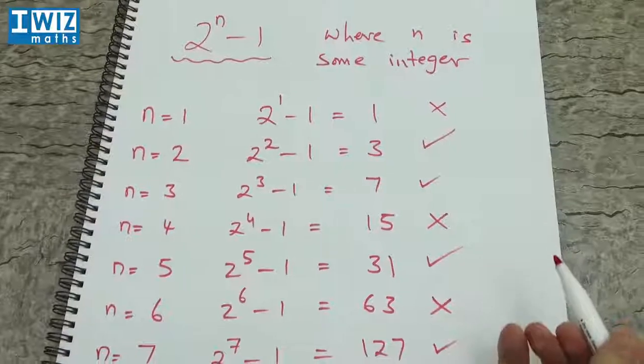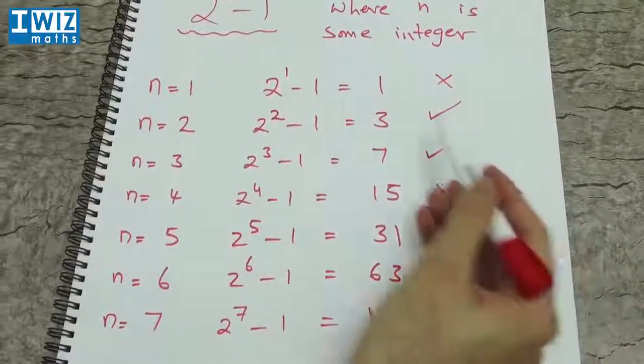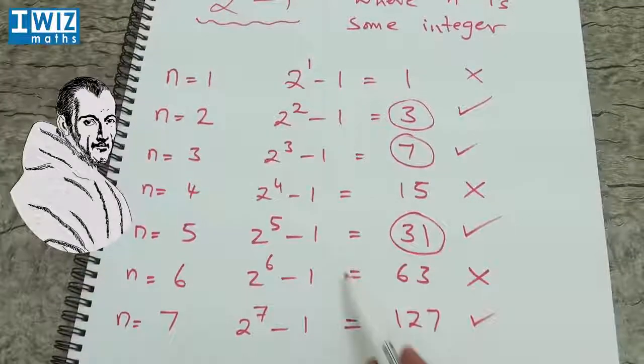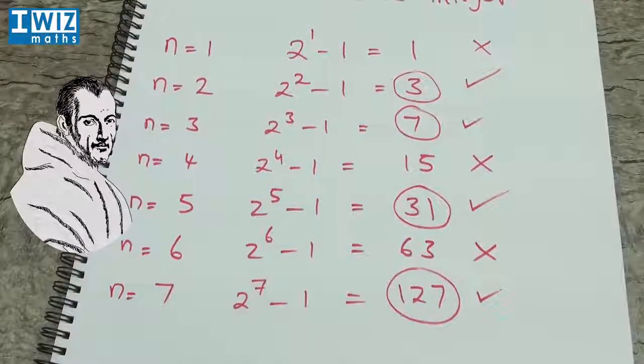So in fact, the first 4 Mersenne primes are 3, 7, 31 and 127.